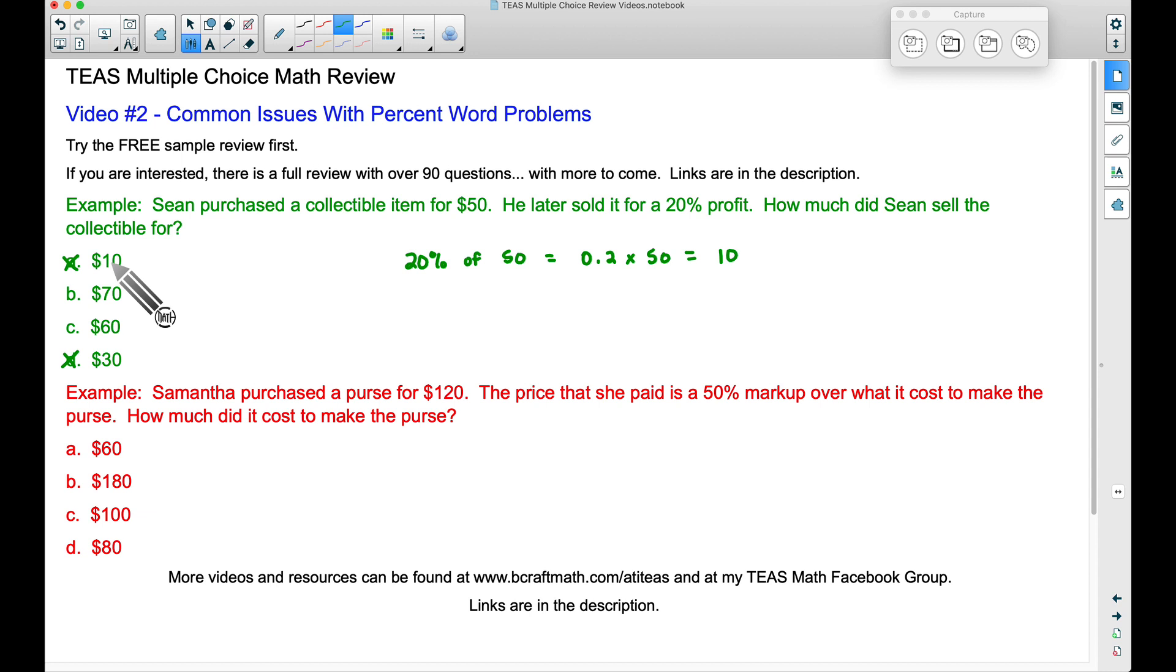Had the question said how much profit did Sean make, the answer would be $10. However the question says how much did Sean sell the collectible for? Well remember he bought it for $50 and when he makes a profit he's going to have to sell it for more than $50.